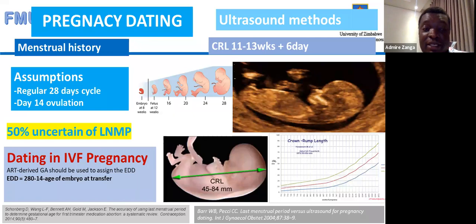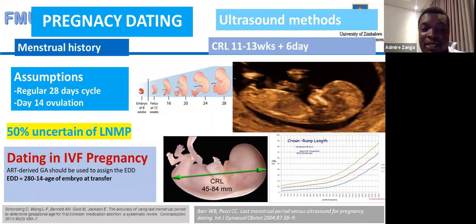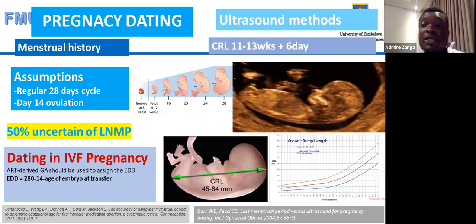IVF pregnancies are gaining popularity. You will come across quite a number of pregnant women who conceived through assisted reproductive therapy. For those women, this is actually the gold standard of pregnancy dating because the conception is known. When using LNMP, we assumed ovulation occurred on the 14th day — but for IVF pregnancies, the sperm and egg are fertilized in a laboratory setting, so conception is actually known. If a woman comes having conceived via IVF, they will already have their gestational age and we do not change that.